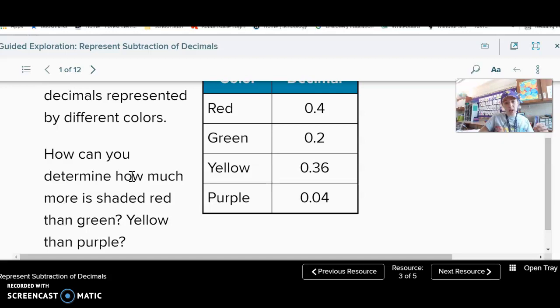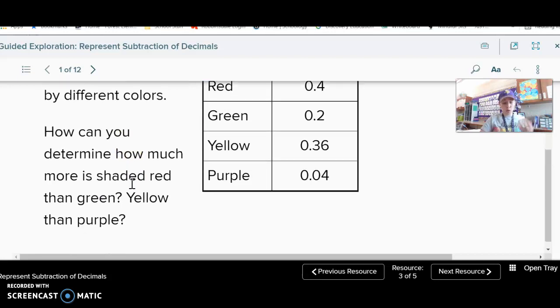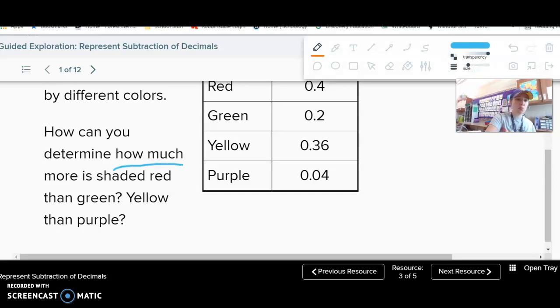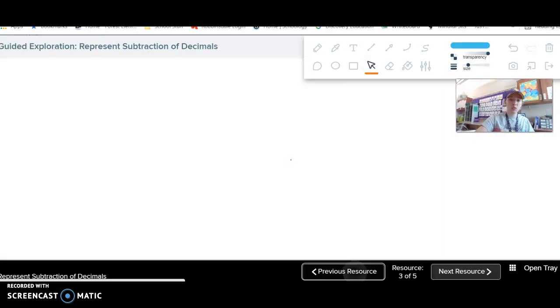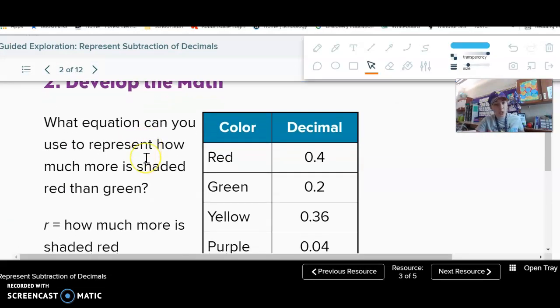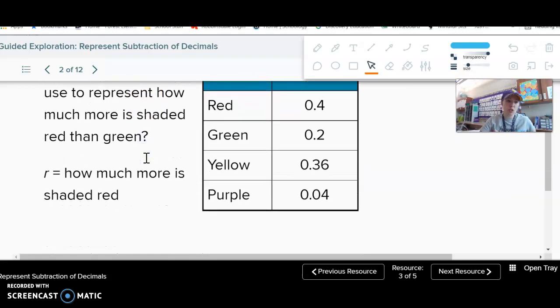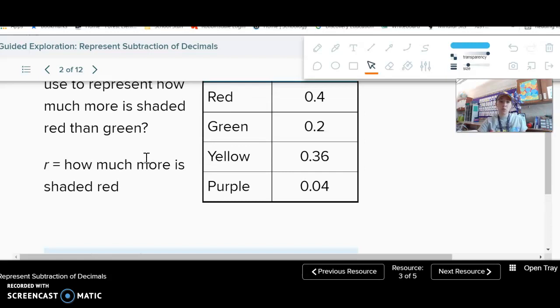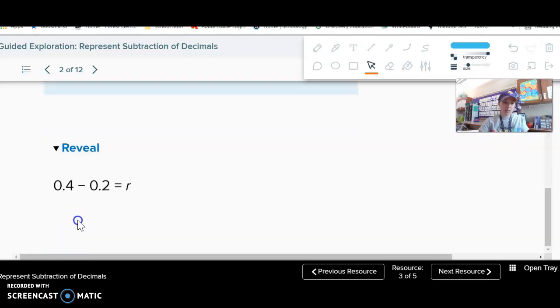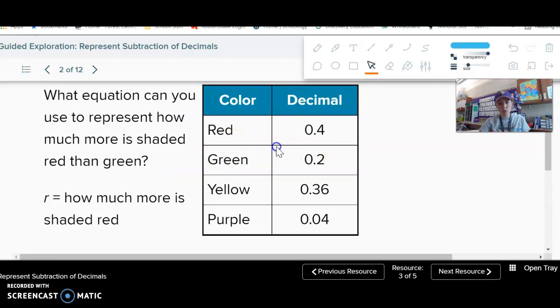How can you determine how much more is shaded red than green? Later we'll compare yellow and purple. I could use subtraction for this because it's asking how much more. If I'm ever trying to find how much more, how much less, taller, shorter, anything like that, I'm going to subtract to find it. What equation could I use to represent how much more is shaded red than green? Well, I could take red minus green - so 0.4 minus 0.2, because red is four tenths and green is two tenths.